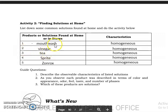So let's continue. For the products or solutions found at home or in store, we have listed here five. Their characteristics are homogeneous, that means uniform throughout. Number one guide question, describe the observable characteristics of listed solutions. It's homogeneous or uniform throughout, that's the answer for number one. Listen carefully, later you might ask again. Next, as you observe each product, what was described in terms of color and appearance, odor, feel, taste, and number of phases? Which of these products are solutions? Of course, all the five products listed here are solutions because they are homogeneous. They appear uniform throughout.